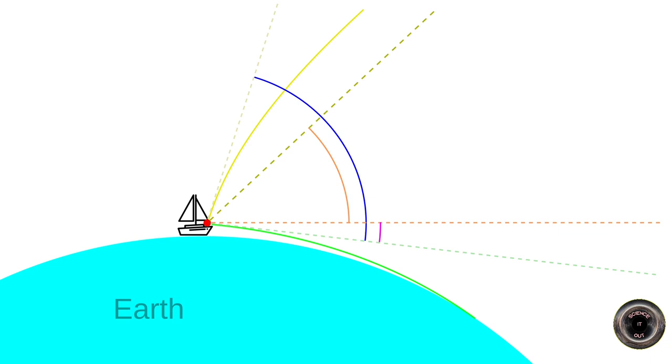First, this angle, which is the difference between horizontal and the apparent direction to the horizon, called the dip correction. It is tabulated in the nautical almanacs and depends on the observer height. So, if we know how high we are above the sea level, we can find out what the dip angle is and subtract it from the sextant measurement.